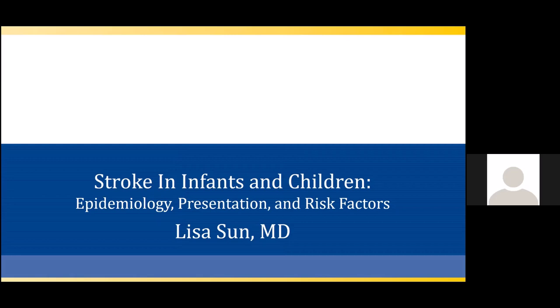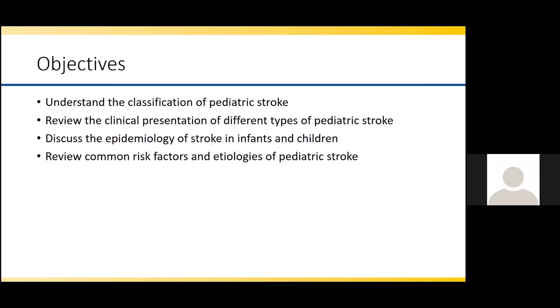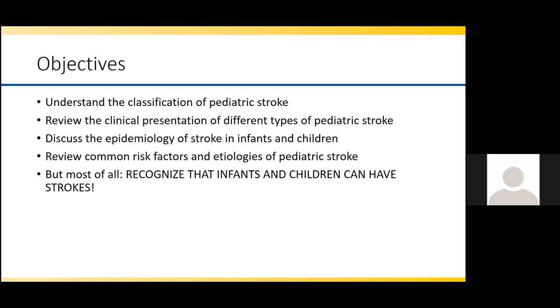The objectives of the talk today will be to first understand how we classify pediatric stroke and the different categories we think about when conceptualizing stroke in infants and children. We'll then review the clinical presentation of different types of pediatric stroke, the epidemiology of stroke in infants and children, and common risk factors and etiologies. The most important message is that infants and children can have strokes, and that should always be part of your thought process when evaluating a child with a neurologic process.